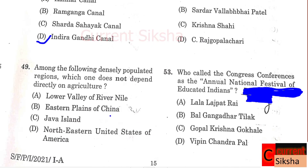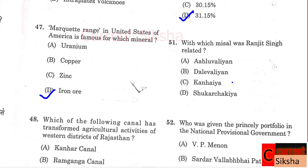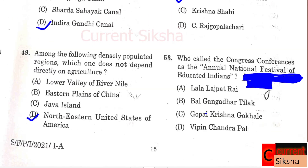Question 49: Among the following densely populated regions, which one does not depend directly on agriculture? Correct option D - North Eastern United States of America has the highest population. Question 50: Out of total population of 1.21 crore, what was the percentage of urbanization in the 2011 Census of India? Question 53: Correct option B - Shukar Chakya.